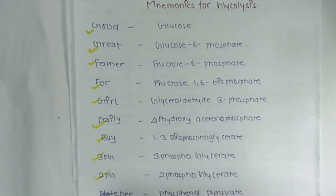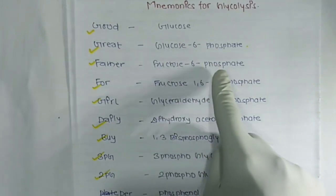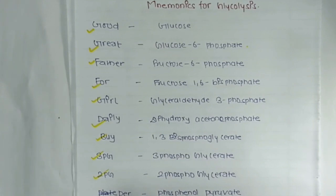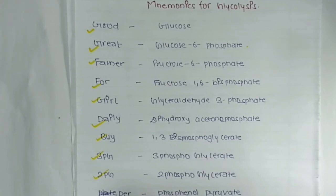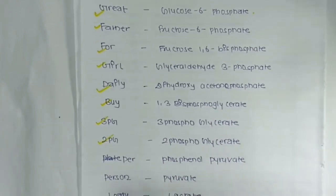Now, what does each letter represent? G represents glucose, another G represents glucose-6-phosphate, F represents fructose-6-phosphate, another F represents fructose-1,6-bisphosphate, G represents glyceraldehyde-3-phosphate, D represents dihydroxyacetone phosphate, B represents 1,3-bisphosphoglycerate, 3PG represents 3-phosphoglycerate, 2PG represents 2-phosphoglycerate, P represents phosphoenolpyruvate, another P represents pyruvate, and L represents lactate.